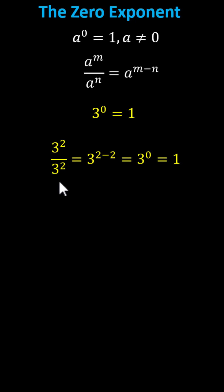But if we apply the quotient property of exponents, three squared divided by three squared equals three to the power of the quantity two minus two, which simplifies to three to the power of zero, which again we know must equal one.